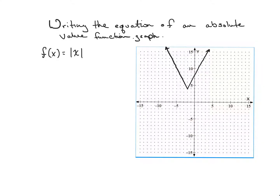What we just need to remember is its behavior. Let's plot the original function. The original function starts at (0, 0) and has this ratio of over 1, up 1, over 2, up 2, and so forth.